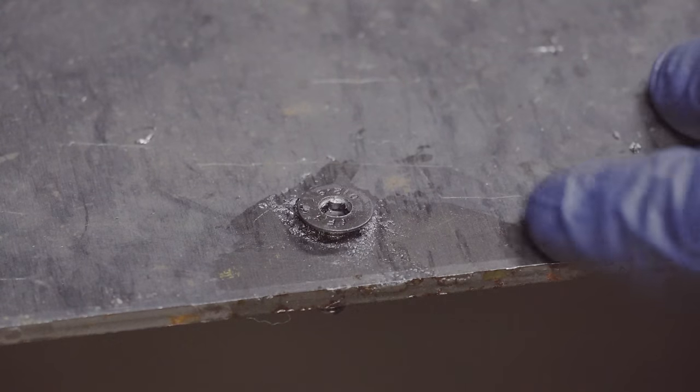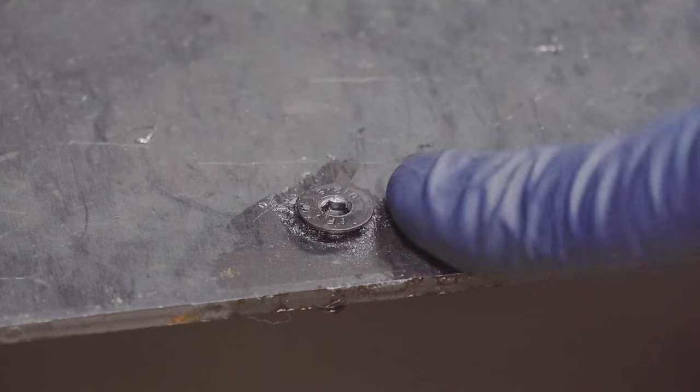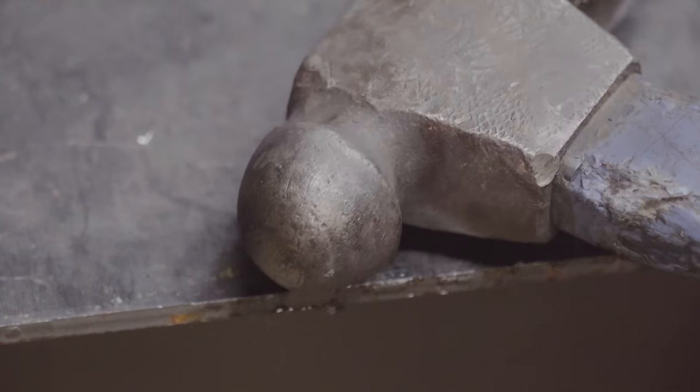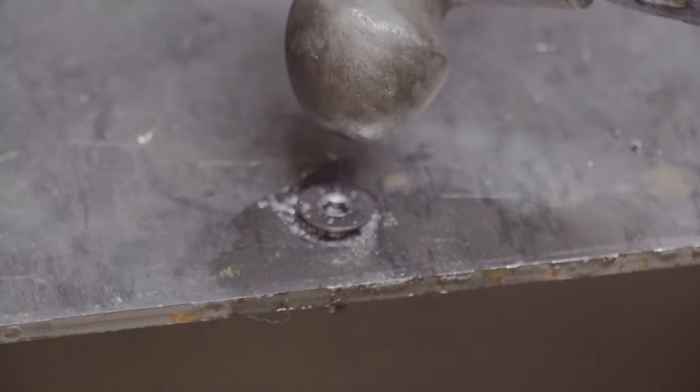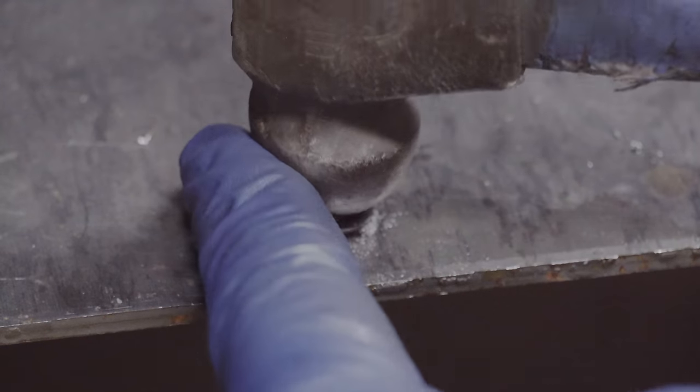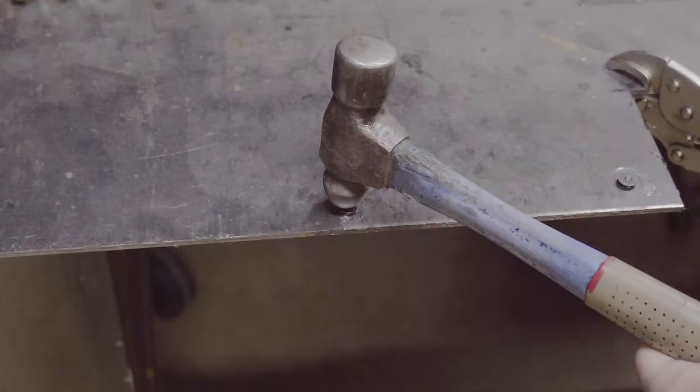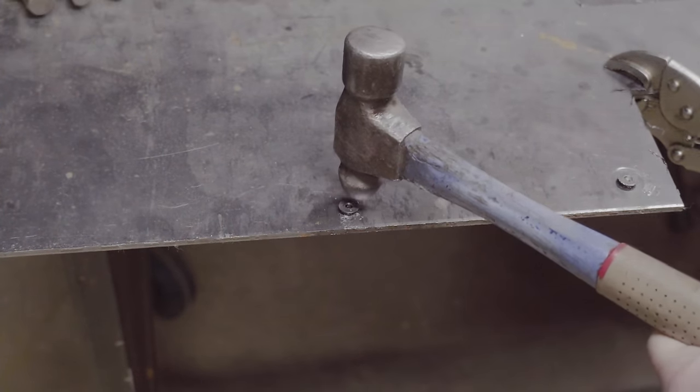Now if you've tried to get a hold of the bolt and you can't get a hold of it, you could try this way next. Take your ball-peen hammer, place it over the rounded hole, and hit down with a sledgehammer.